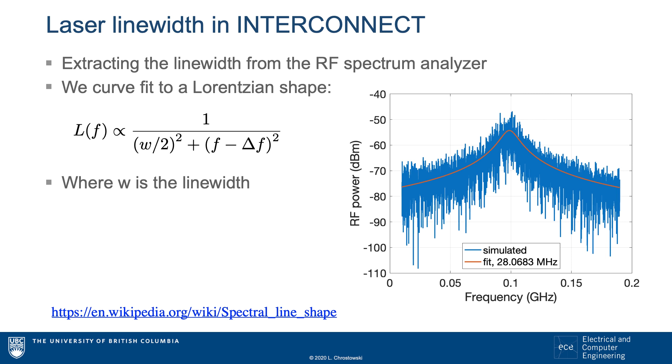To extract the linewidth from the RF spectrum analyzer, we curve fit the data to a Lorentzian lineshape function. The W parameter is the linewidth of the signal, and is the linewidth of the original laser.